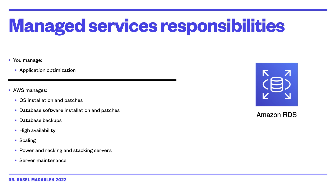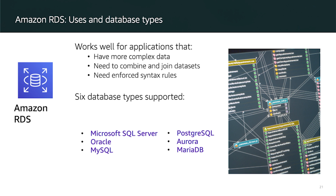In AWS RDS you have multiple options to create a database instance. A database instance is an isolated database environment that can contain multiple user-created databases, accessed using the same tools as a standalone database. The resources of a database instance are determined by its instance class and storage type, which have different performance characteristics and pricing models, enabling you to customize performance and cost.